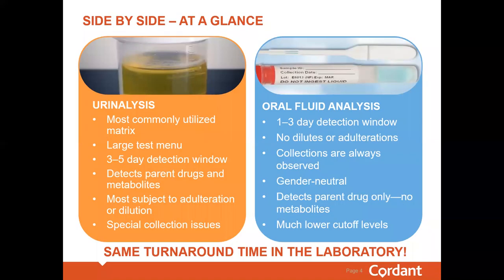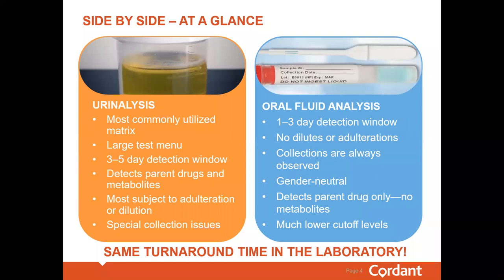Today our focus will be on oral fluid, but let's do a quick review of urine so we can compare these popular sample types. Urine is the most commonly utilized matrix in toxicology. It has a long history of use, and many are very comfortable with interpretation of drug testing results in urine. It has a long window of detection — about three to five days for most drugs — is cost-efficient, contains high levels of metabolites and parent drug, allowing for ease of detection.